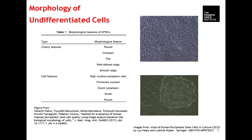Looking at the morphology of undifferentiated cells, we look for colony features: colonies that are round, compact, flat, well-defined, and have smooth edges. The cells within those colonies have a high nucleus-to-cytoplasm ratio, prominent nucleoli, scant cytoplasm, and are small and round. When working with dissociation reagents that make single cells, you may get a lawn of cells rather than colony morphology. But for those working with human embryonic or pluripotent stem cells, we look at cells on a day-to-day basis — this morphology is key to identifying undifferentiated cells.